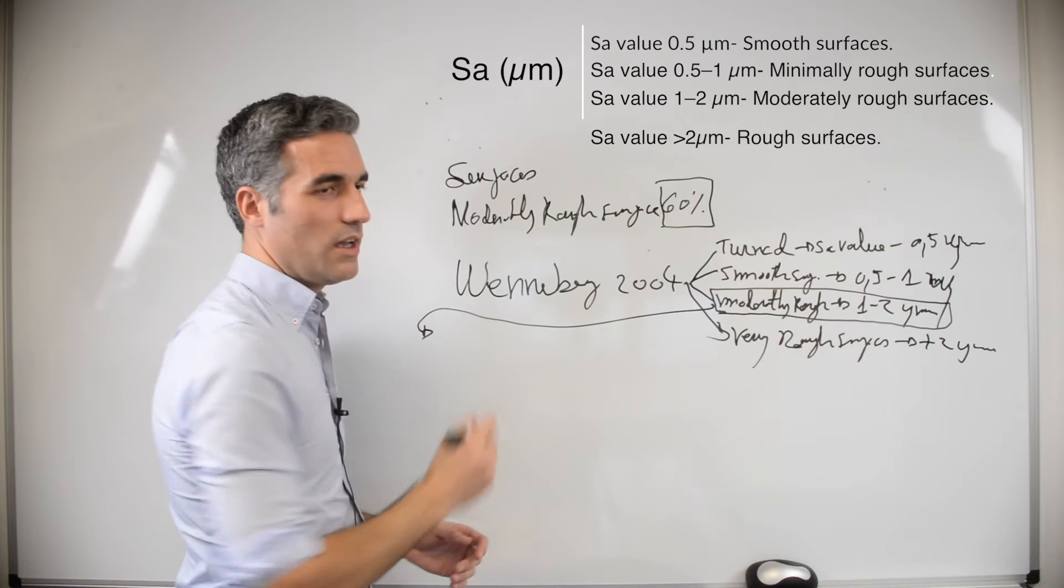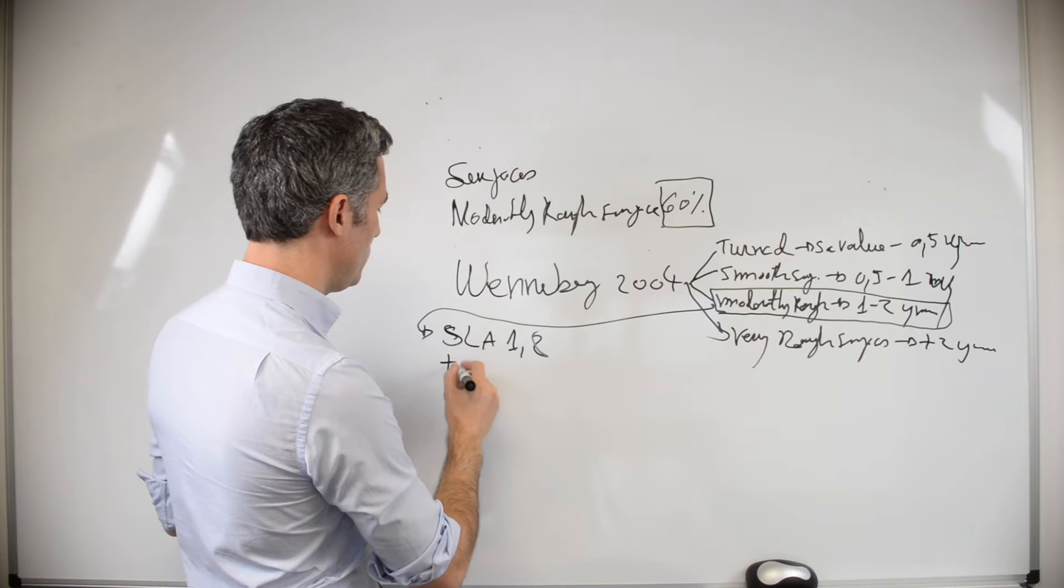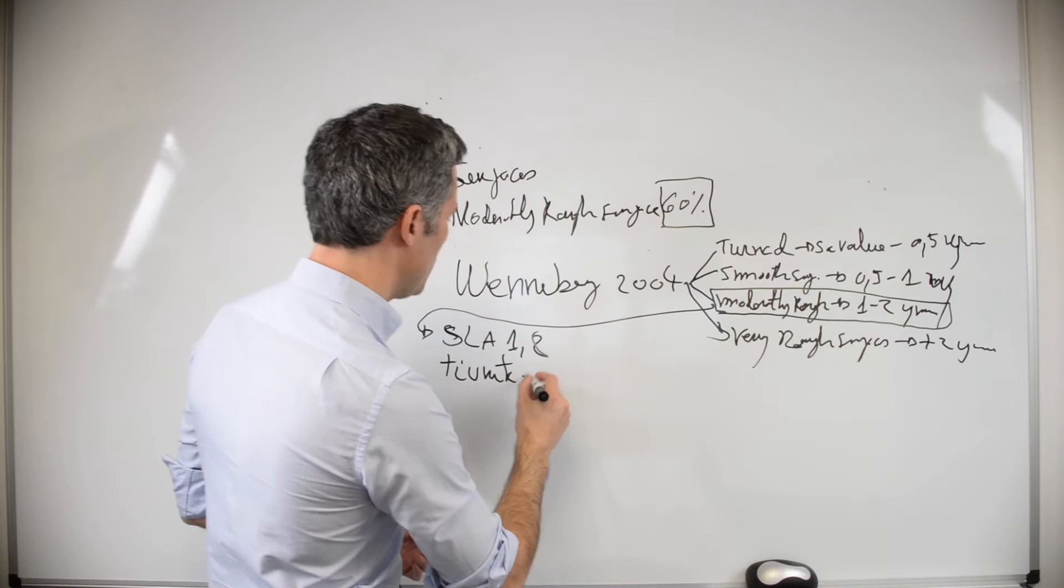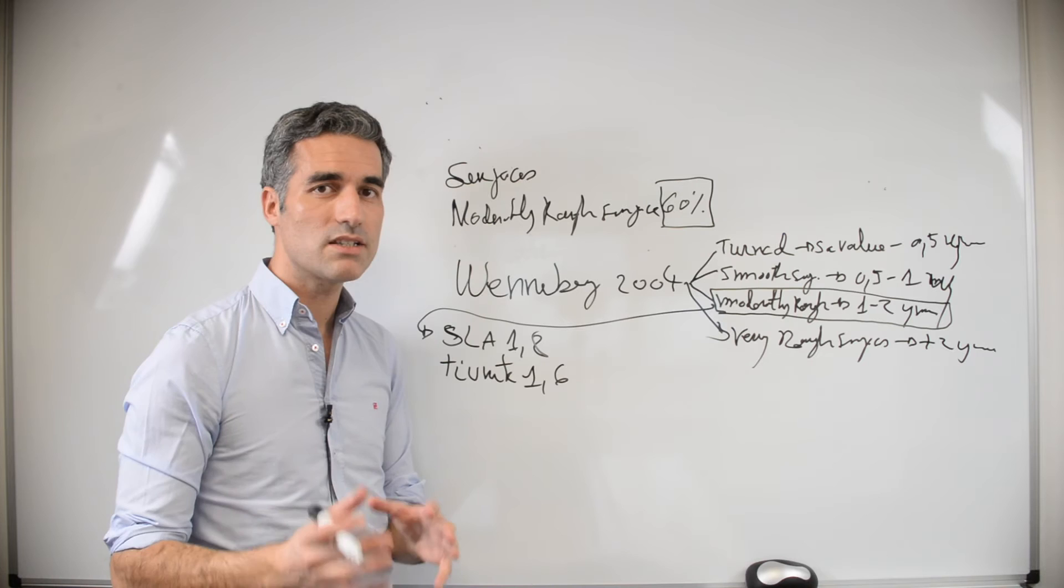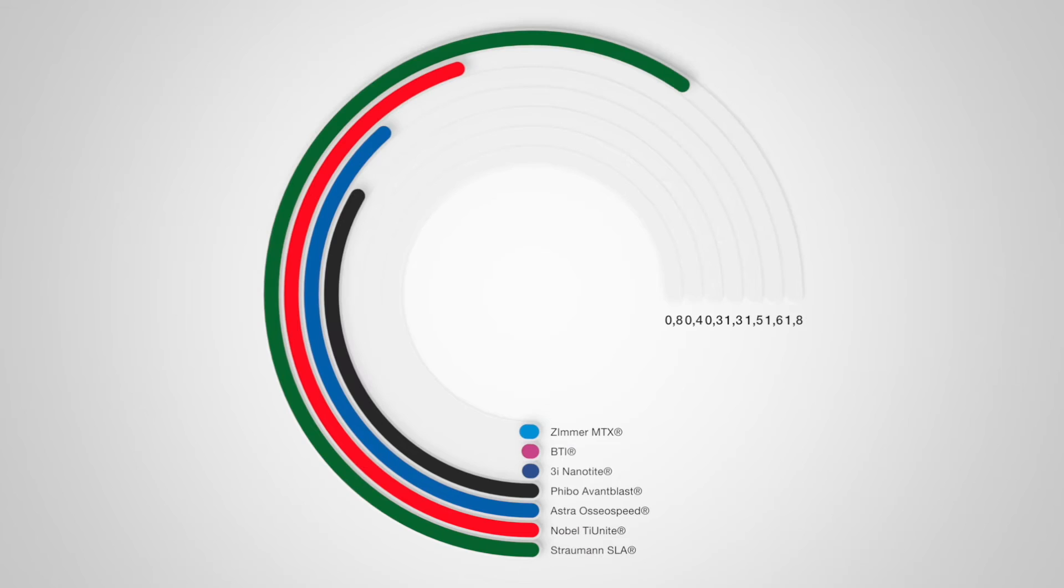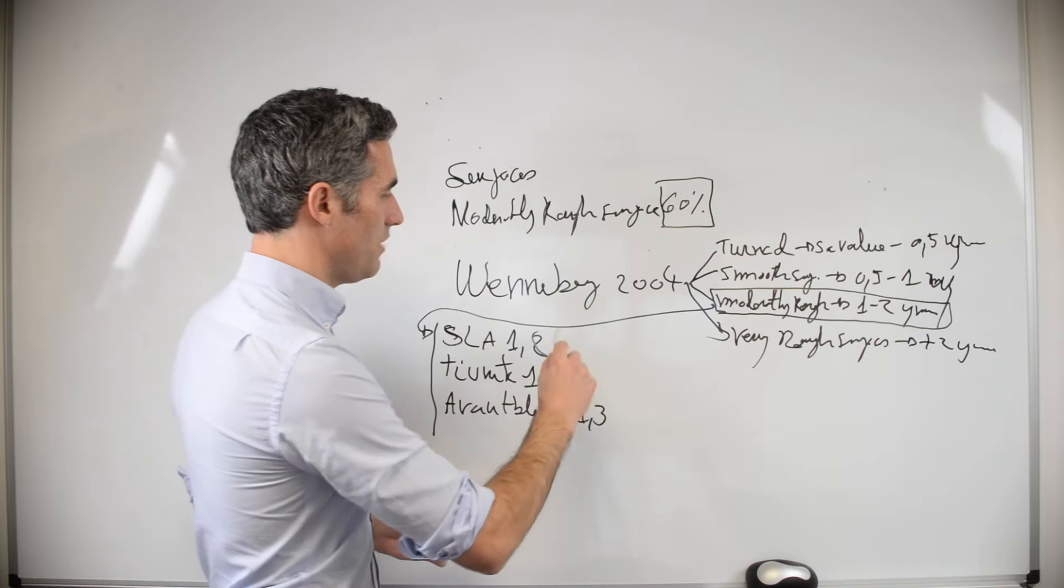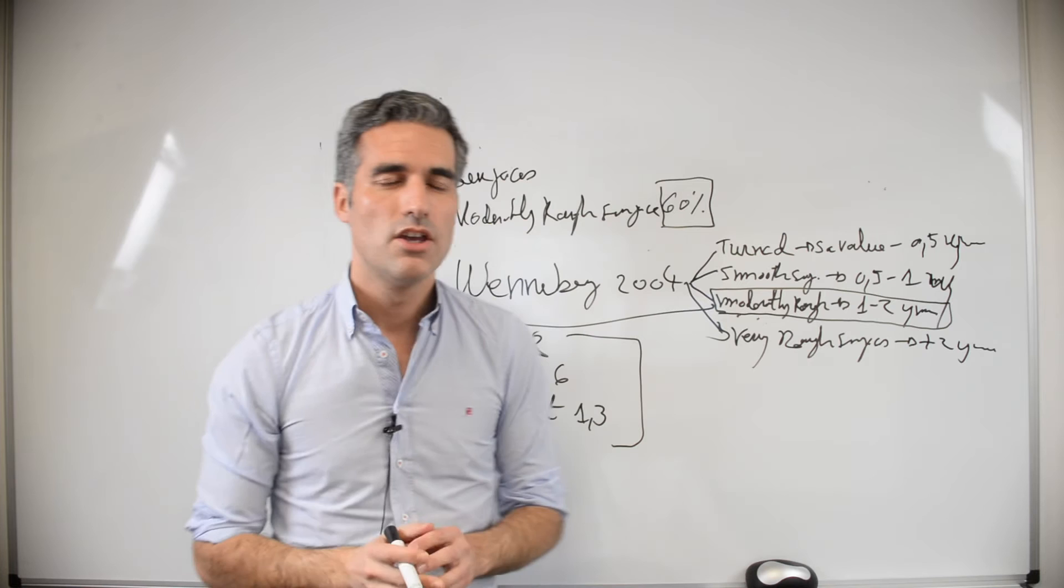What is great about this one? Let's see, for example, Straumann SELA has a 1.8 SA, Tiunit from Nobel has a 1.6, and there is a surface that I use in my system, the Album Blast from Fibo, that has 1.3. This is some examples—of course, there are more values. Every surface has its SA value.